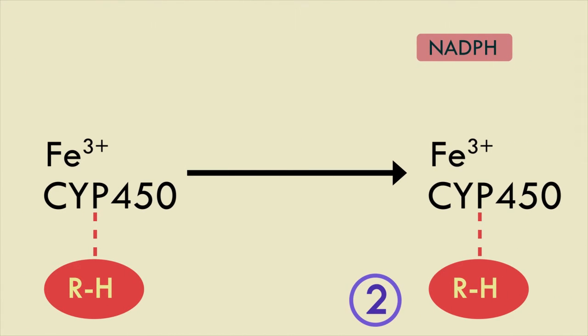In the second step, the enzyme substrate complex will get reduced by NADPH. NADPH will get oxidized to NAD+, while the electron gets transferred to the enzyme substrate complex. So now the oxidation state of the enzyme is Fe2+. So the second step involves reduction of the enzyme complex and oxidation of the NADPH.